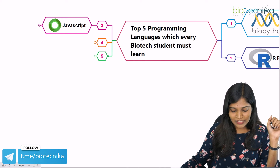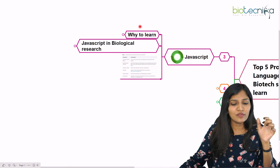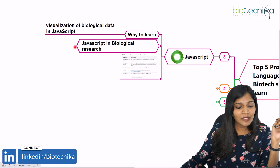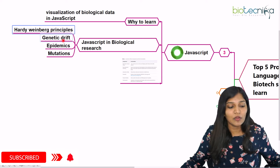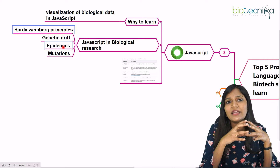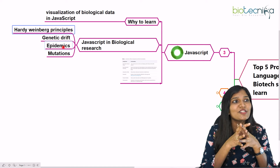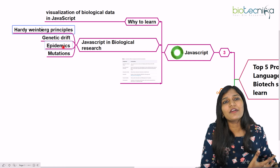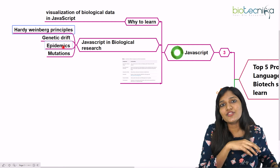The next language is JavaScript. Most of you know about it. As biologists, why do we need to learn JavaScript? It is helpful in visualizing biological data. In biological research, JavaScript is useful for analyzing Hardy-Weinberg's principle, genetic drift, ecology, spread of diseases, mutations, or migration of species. Also, approximately 67.2% of the entire world's web community uses JavaScript on their websites.